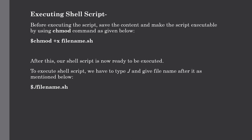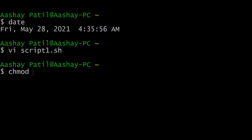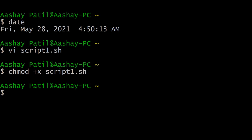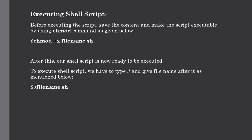After creating the shell script, we need to make it executable. To do that we use the chmod command — give chmod, then +x to denote executable permission, followed by the file name script1.sh. As you can see, we have successfully given executable permission to our file so that we can execute it without any error. Our shell script is now ready to be executed.